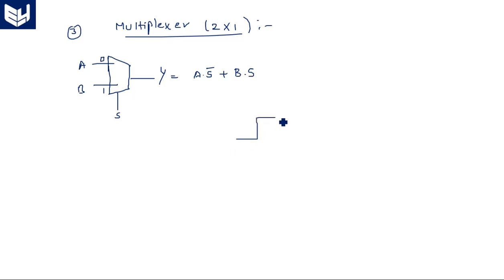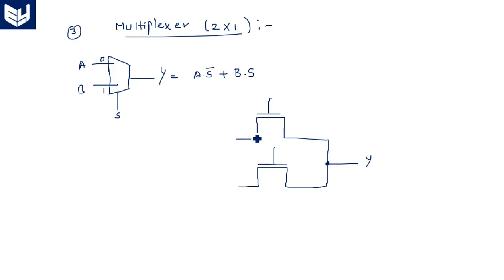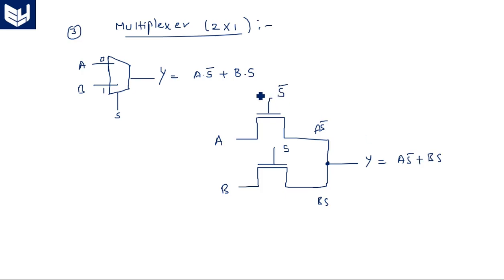The same 2-by-1 multiplexer can be designed very simply using two NMOS transistors. One transistor has input A and control input S-bar, giving output A·S-bar; the other has input B and control input S, giving output B·S. Together they give Y = A·S-bar + B·S. The select input S is connected directly to one transistor and through a NOT gate to the other. This shows how pass transistor logic is helpful to design any logic circuit.